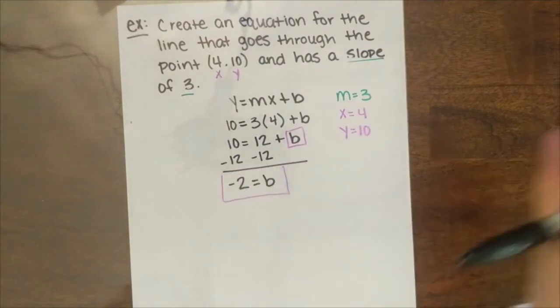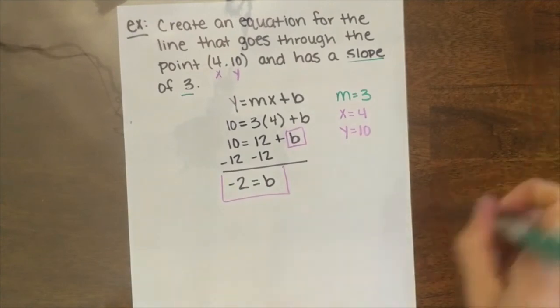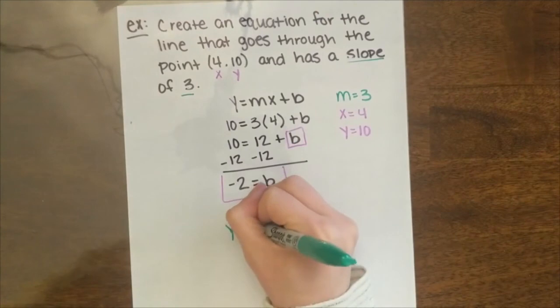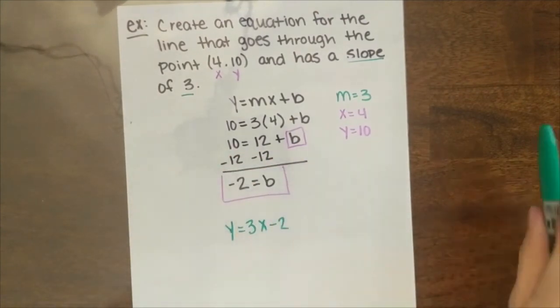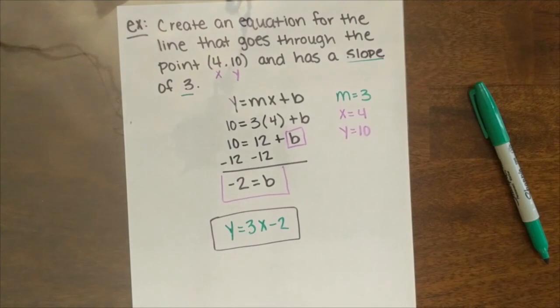So we've solved for our y-intercept. Now we can substitute back into our equation. So I have y equals, our m is 3x, and our b is negative 2, so we're going to put minus 2. So the equation of the line that has a slope of 3 and goes through the point 4, 10 is y equals 3x minus 2.